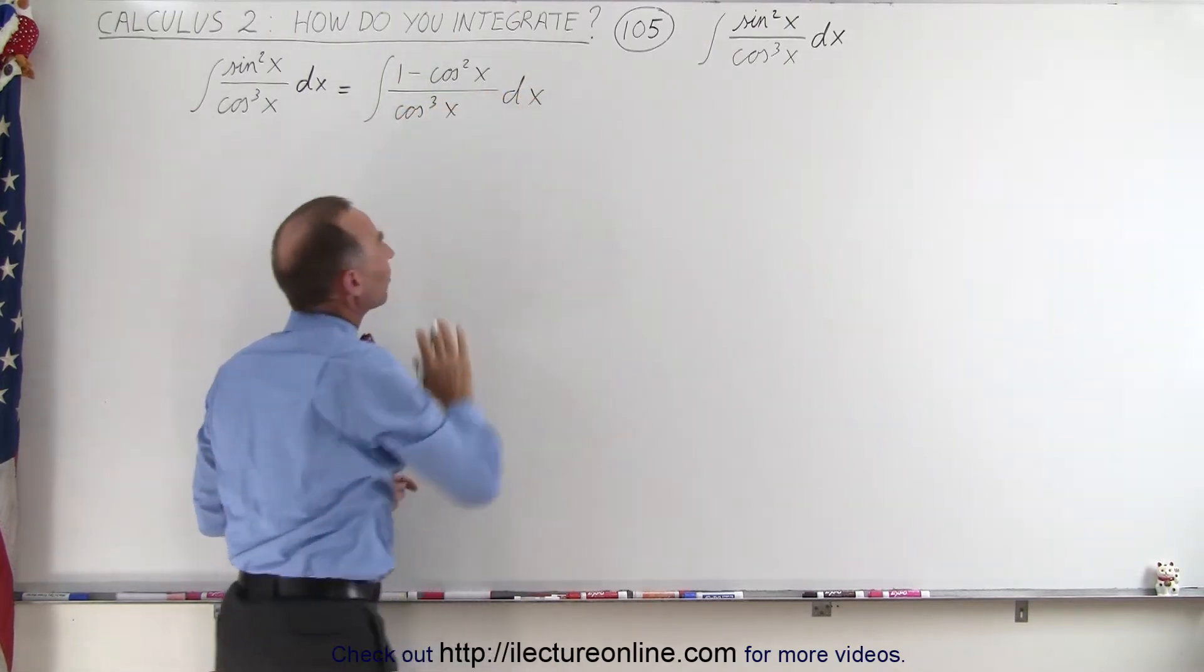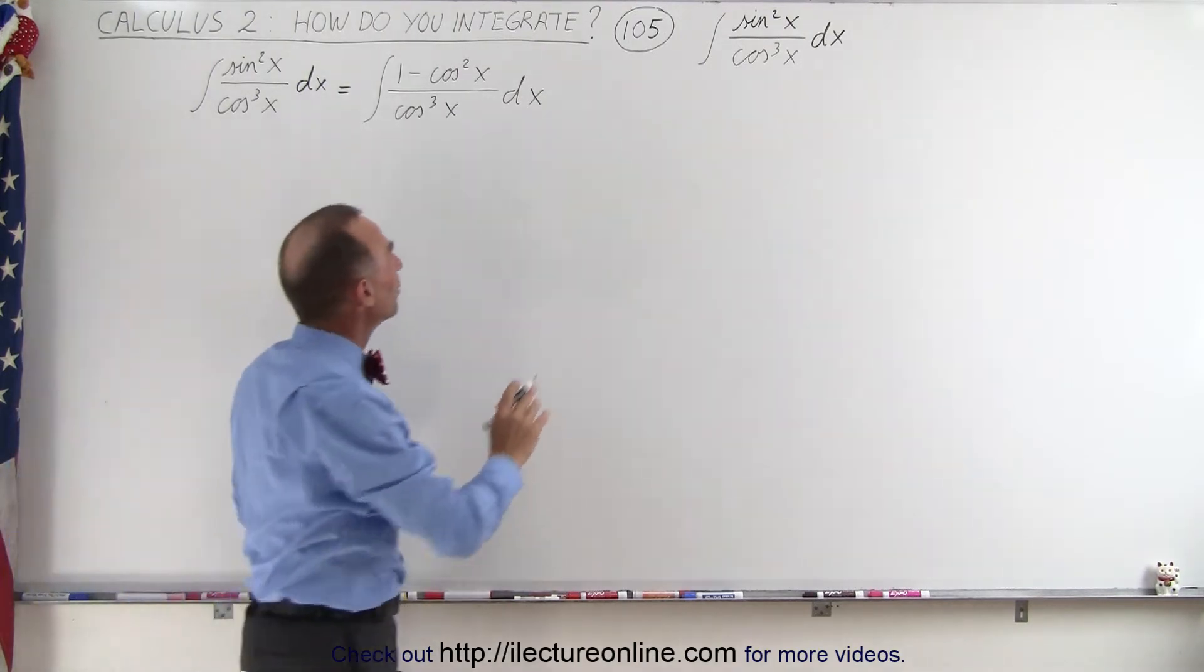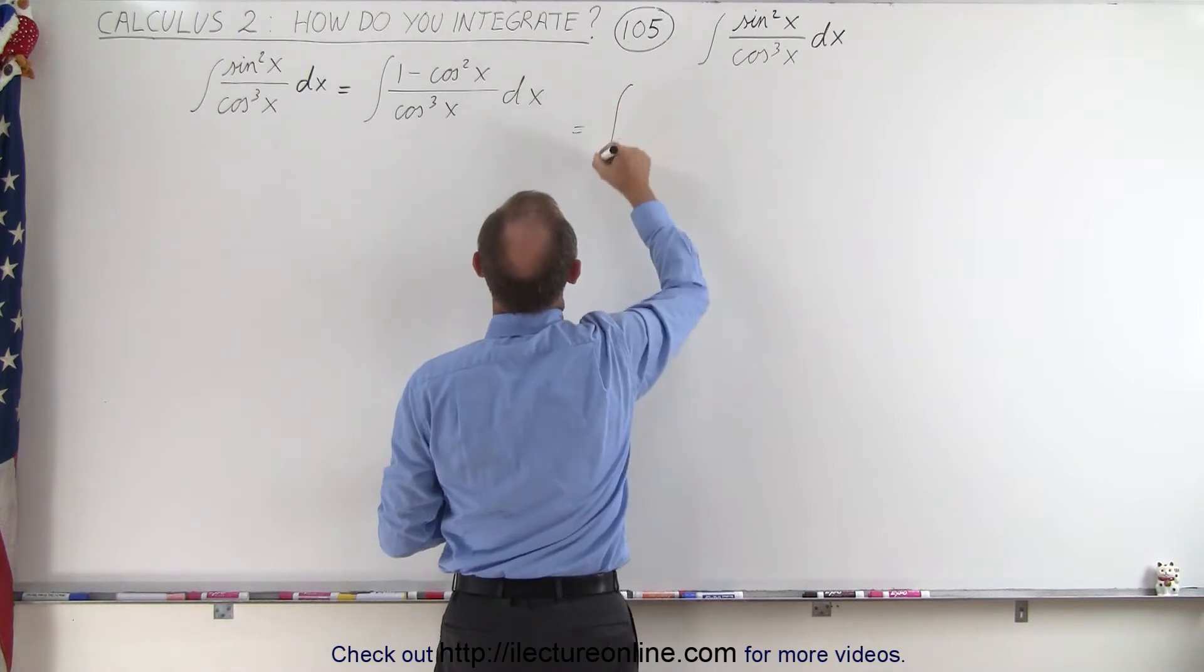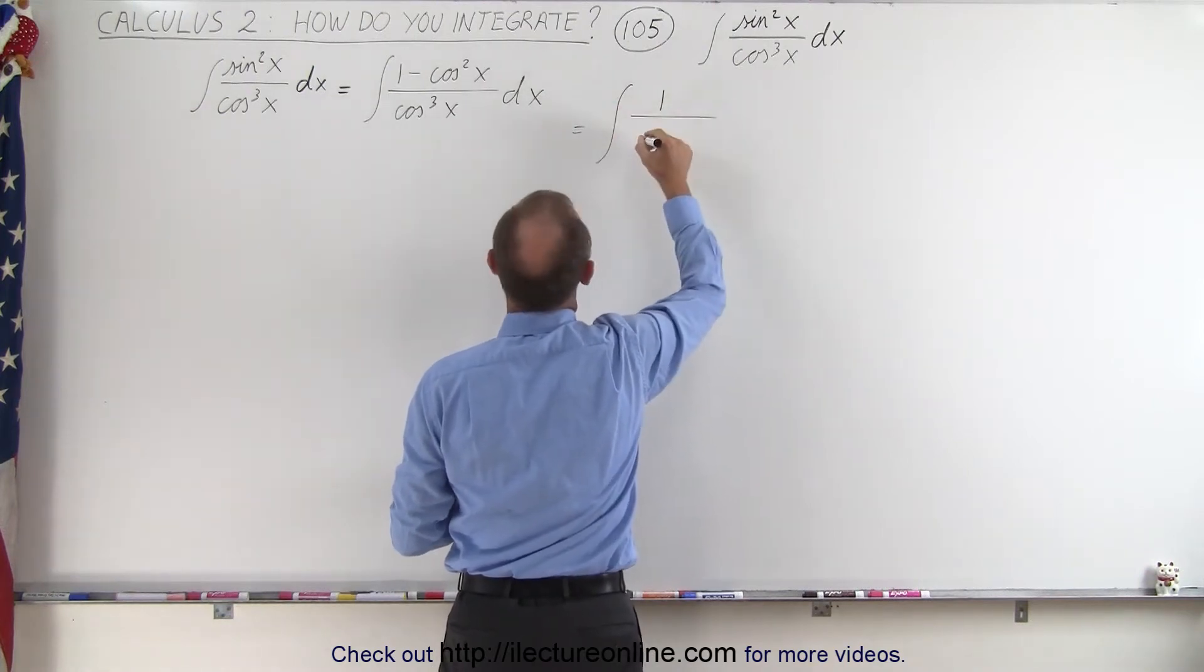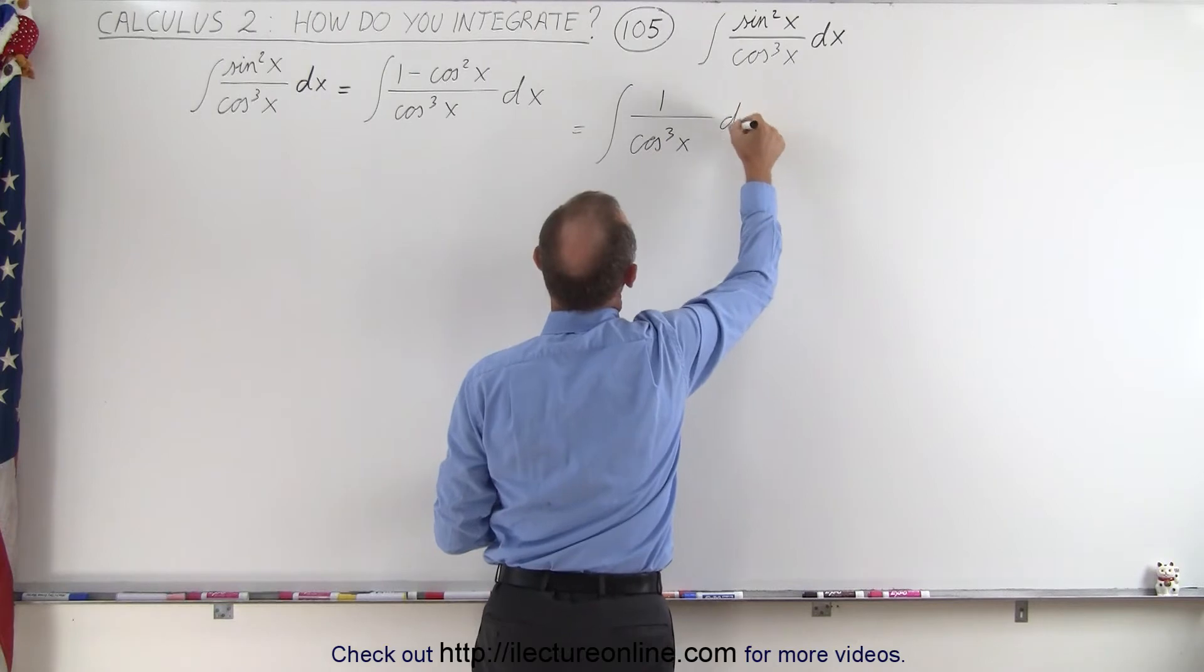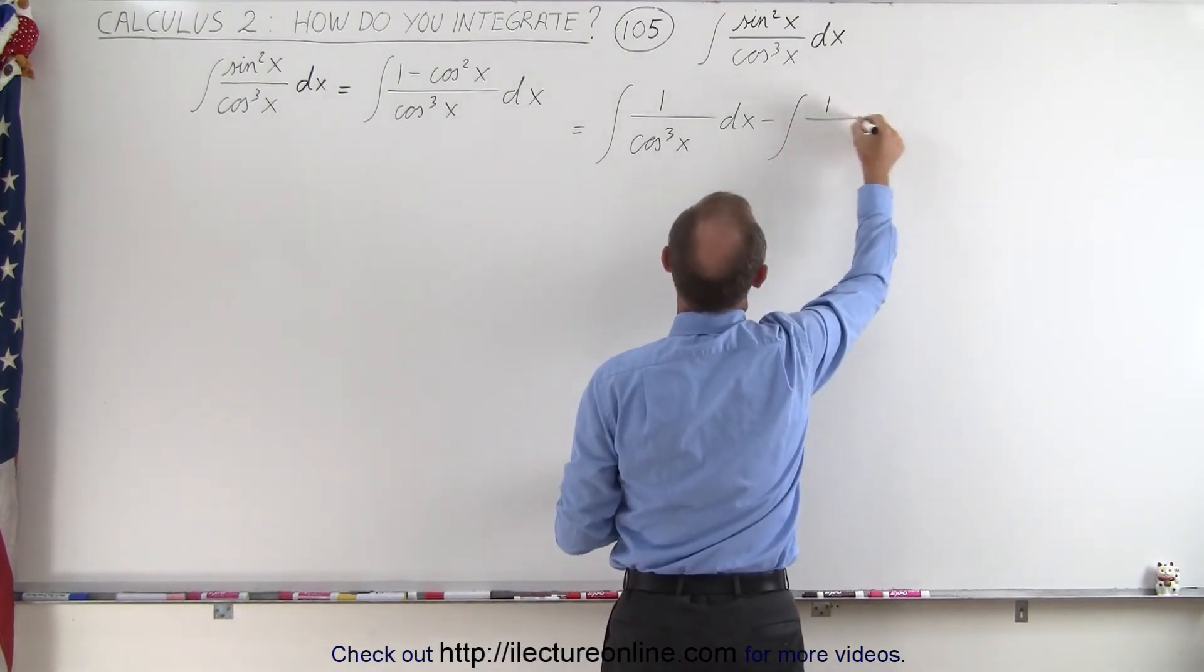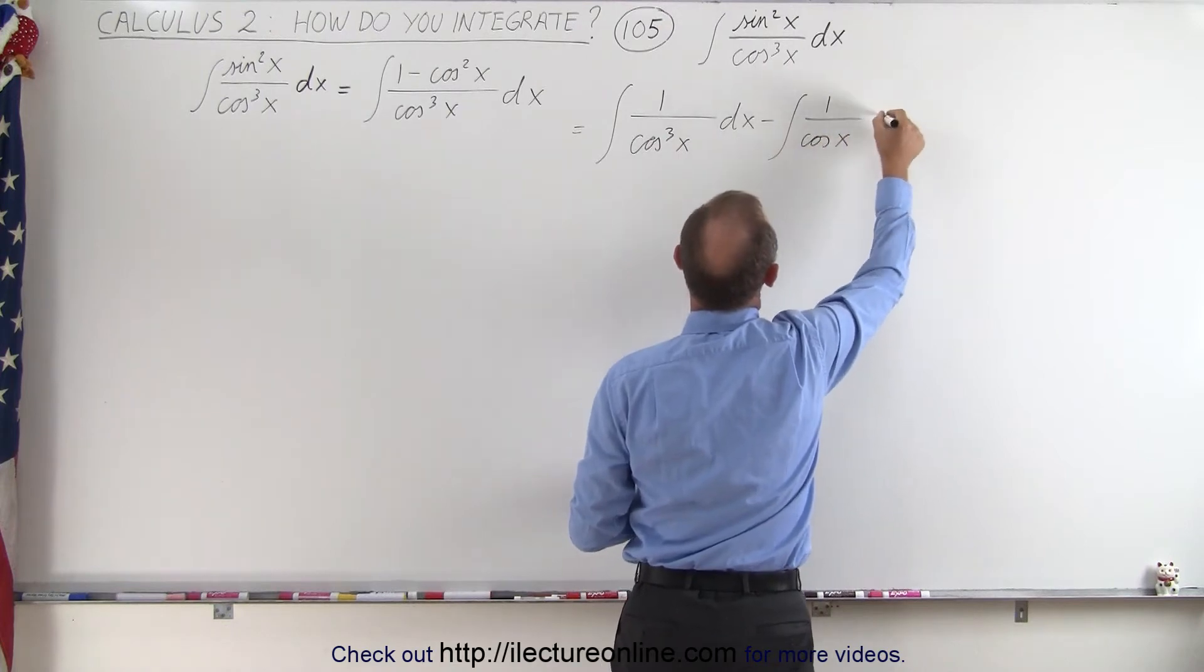And then, of course, we can write this as two separate integrals. So let's go ahead and do that. So this is equal to the first integral. That would be 1 over the cosine cube of x dx minus the integral of 1 over the cosine of x dx.